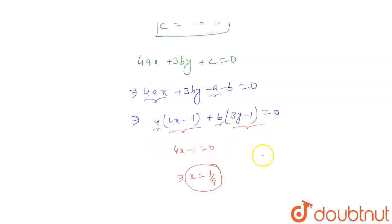And if this will be 0, 3y minus 1 will be 0. Then you can say y is equal to 1 by 3.